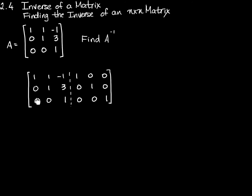I'm going to perform elementary row operations on the entire concatenated matrix, converting the left-hand side to the identity matrix, which produces the inverse on the right-hand side. We have a 1 in this position and zeros below it, so we're done with that column. The next pivot is also already a 1 with everything below it zero, and the third pivot is also a 1. So we don't need forward elimination for this matrix, but we still need to do the backward elimination.